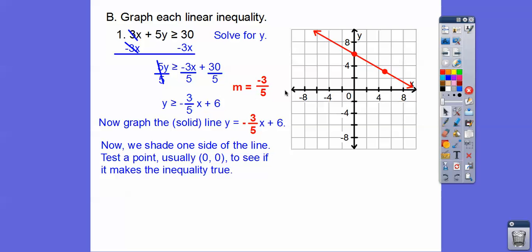So if (0,0) makes this inequality up here true, then I shade the side (0,0) is on because it was true. It means all the points on this side. If it makes it false, that means it's going to be the other side of the line. So let's put in (0,0).